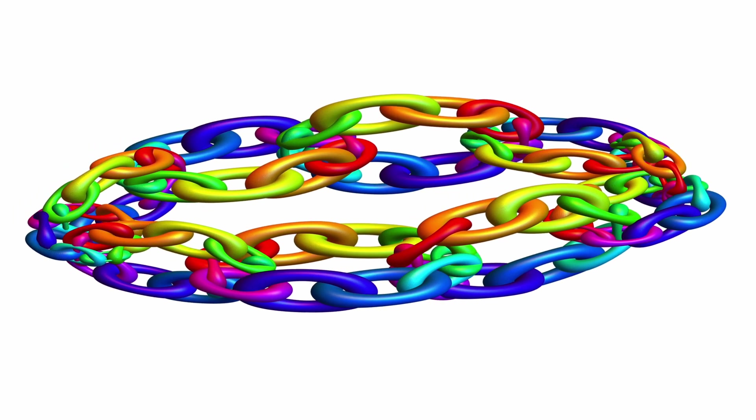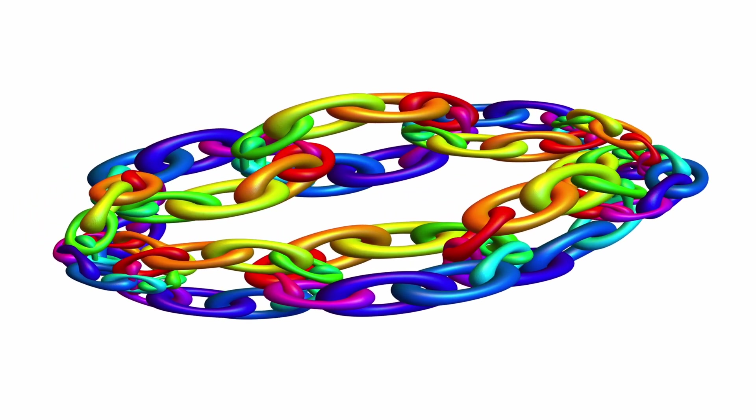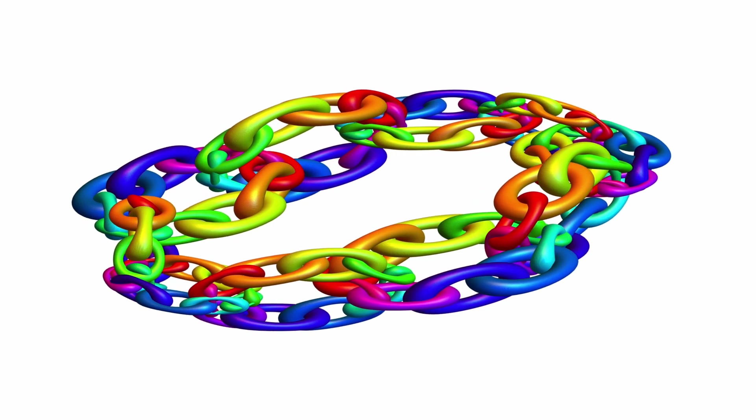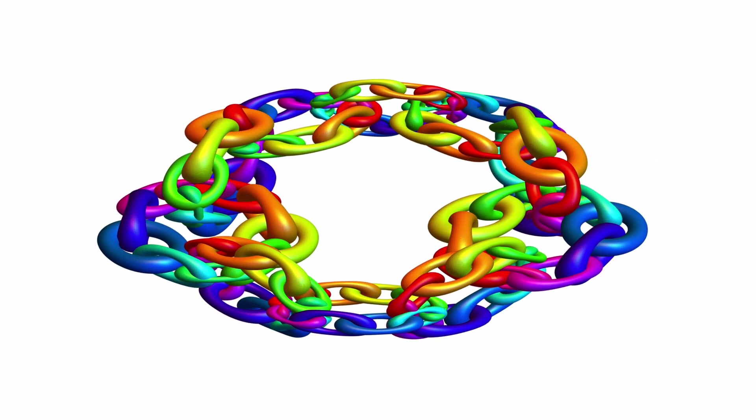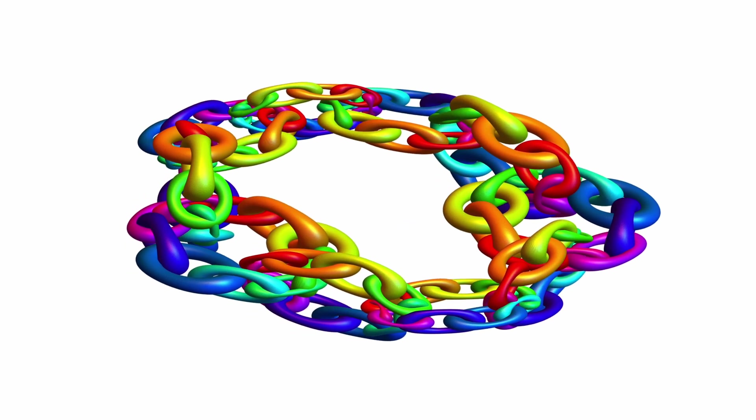Start with the torus, then use 10 tori to build a circular chain. Now each of these chain parts is made again into a chain itself using 10 tori, so that we have 100 tori after two refinement iterations. That's what we see here.